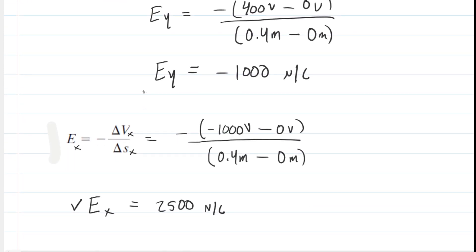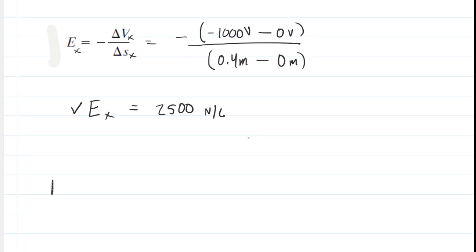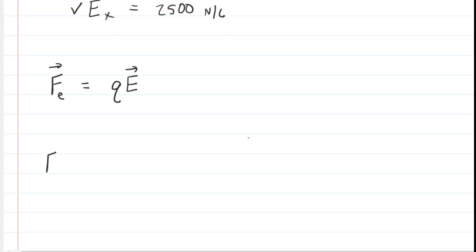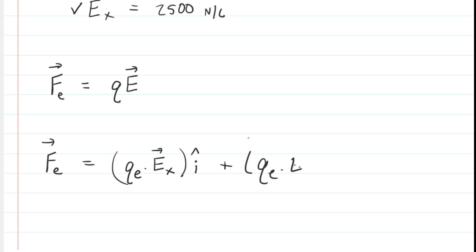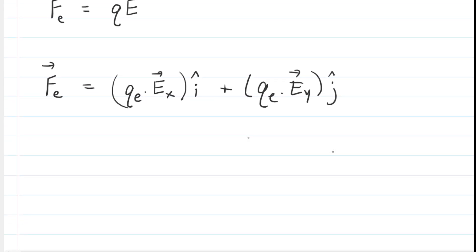Now we have the electric field in both the x and the y-direction. We can use those electric fields to calculate the electric force. The electric force is very simply the charge value multiplied by the electric field. This question asked us to compute the force in unit vector notation. For the x-direction, we're going to take the charge of an electron and multiply that by the electric field in the x-direction, symbolized by i-hat. Then we're going to add the charge of the electron multiplied by the electric field in the y-direction, using j-hat to indicate that direction.